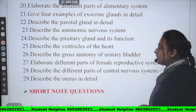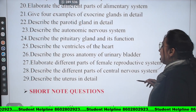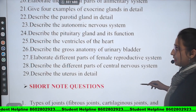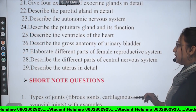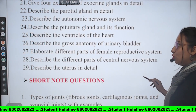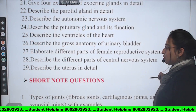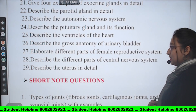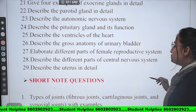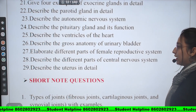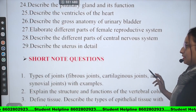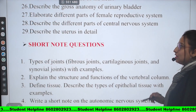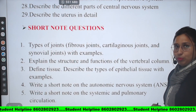Eighteenth: Describe the liver in detail and its histology. Nineteenth: Classify the bones with examples and microstructure. Twentieth: Elaborate the different parts of the alimentary system. Twenty-first: Give four examples of exocrine glands in detail. Twenty-second: Describe the parotid glands in detail. Twenty-third: Describe the autonomic nervous system. Twenty-fourth: Describe the pituitary gland and its functions. Twenty-fifth: Describe the ventricles of the heart. Twenty-sixth: Describe the gross anatomy of the urinary bladder. Twenty-seventh: Elaborate different parts of the female reproductive system. Twenty-eighth: Describe the different parts of the central nervous system. Twenty-ninth: Describe the uterus in detail.